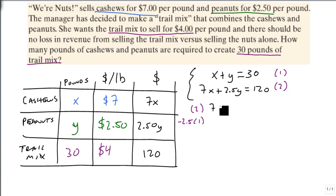So that's going to leave 7x plus 2.5y equals 120. And we're going to get minus 2.5x minus 2.5y equals minus 75.